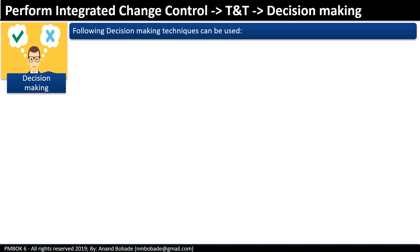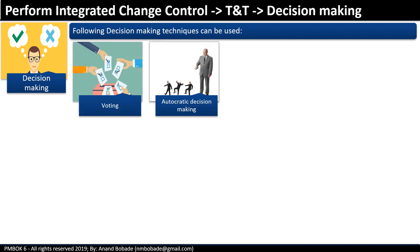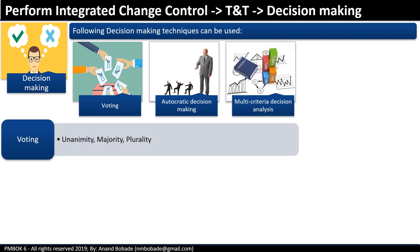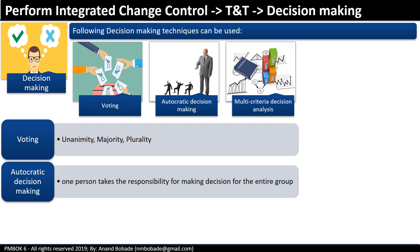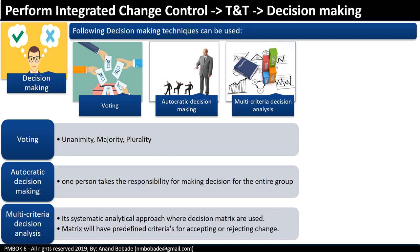Decision making techniques include voting, autocratic decision making, and multi-criteria decision analysis. A change request may go through voting, and a decision may be reached through unanimity, majority, or plurality. In some cases, the sponsor or chair of the CCB may override others and take a decision — this is autocratic decision making. Another way is a group represented by one person who gives consensus on behalf of the group. Multi-criteria decision analysis involves a systematic analytical approach where decision matrices with predefined criteria are used for accepting or rejecting changes.